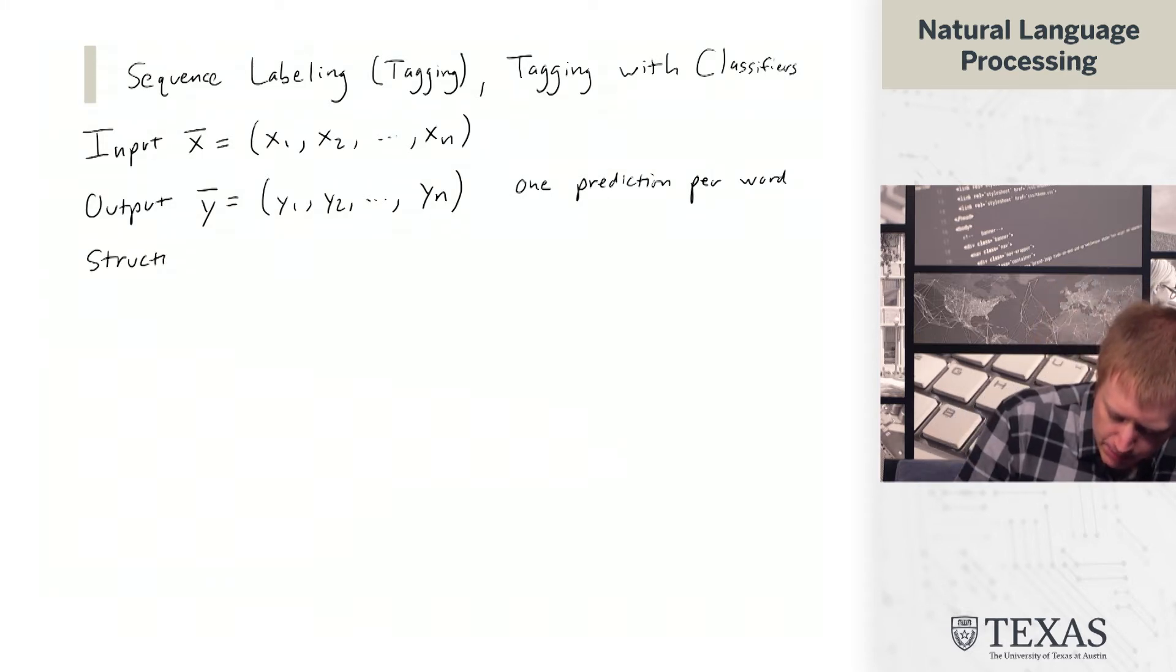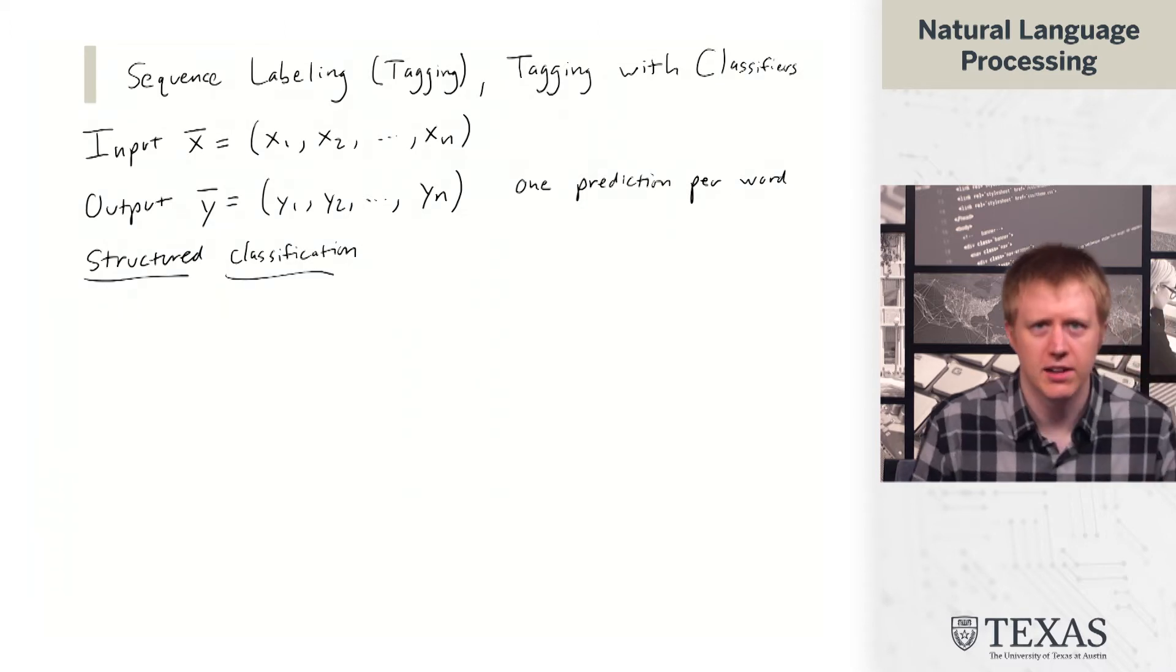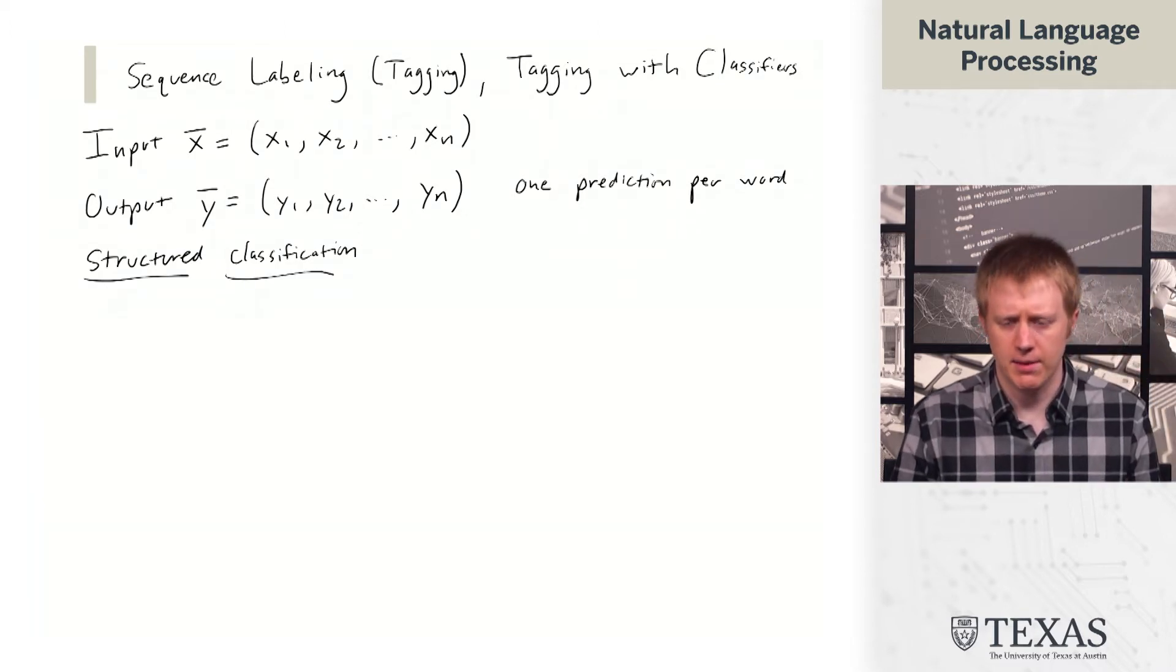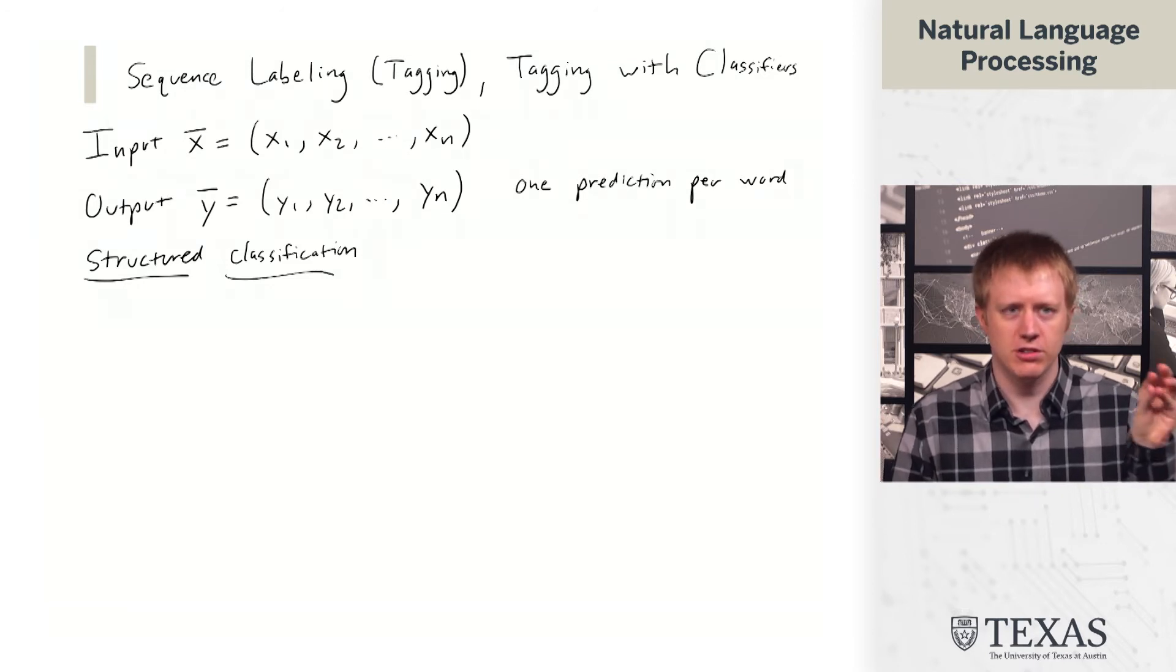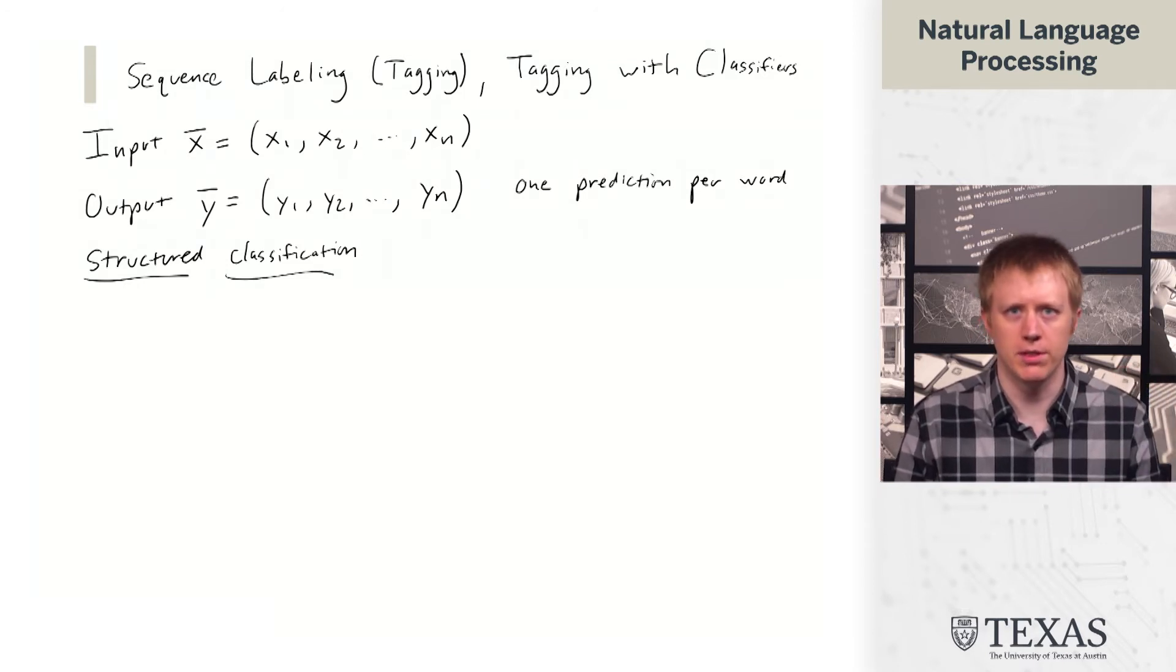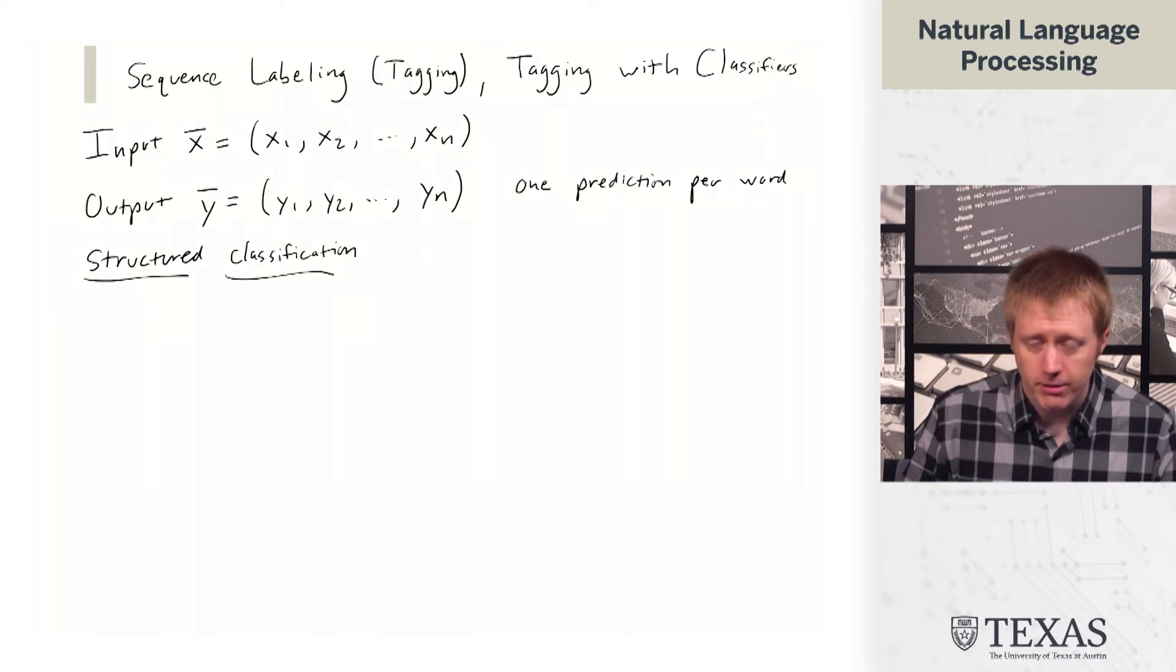And so this is an example of what's called structured classification. And the reason it's structured is because these y's are not just like a bag of independent predictions, but they actually have this sequence associated with them where y2 comes after y1 and comes a certain number of positions before yn.